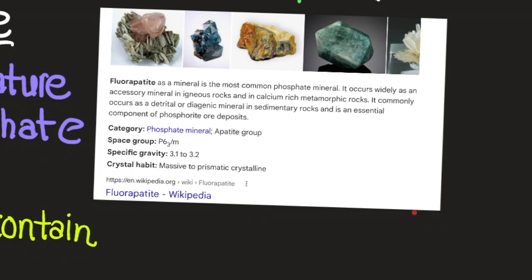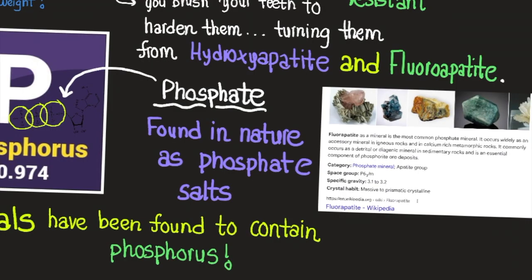Here's the mineral fluorapatite. Fluorapatite is the most common phosphate mineral — it occurs widely as an accessory mineral in igneous rocks and in calcium-rich metamorphic rocks. It commonly occurs as a detrital or diagenetic mineral in sedimentary rocks and is an essential component of phosphorite deposits. Our teeth are made of a molecule known as apatite, which is why we use fluorine to brush our teeth — because it creates a stronger version of our teeth when we brush.